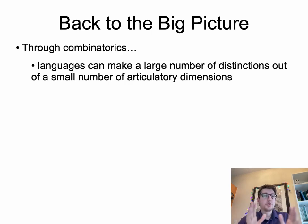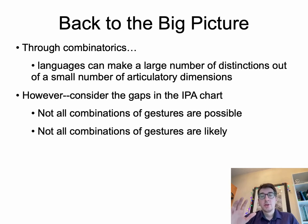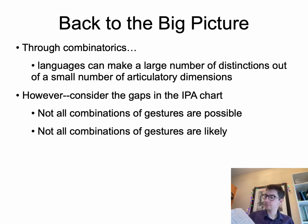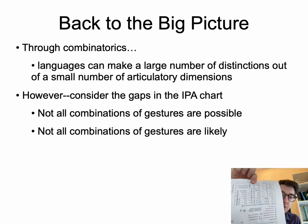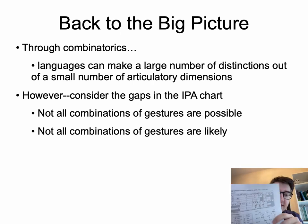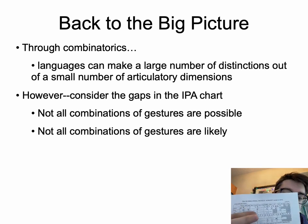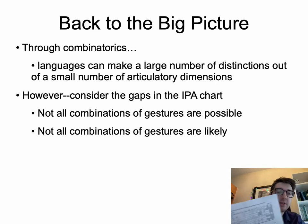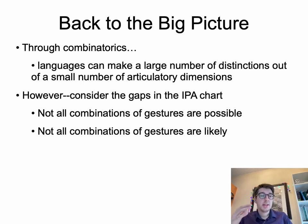Back to the big picture: through combinatorics, languages can make a large number of distinctions out of a small number of articulatory dimensions. However, consider the gaps in the IPA chart — there are white fields and gray fields, because not all combinations of gestures are possible and not all combinations of gestures are likely.